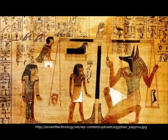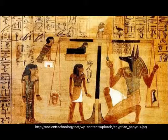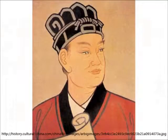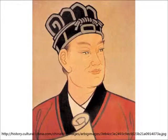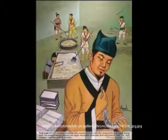Paper is known to have been created by the Chinese in 105 AD during the Han Dynasty. A Chinese government official named Josiah Loon created a sheet of paper by mixing mulberry bark and hemp rags with water, smashing it flat and letting it dry in the sun.